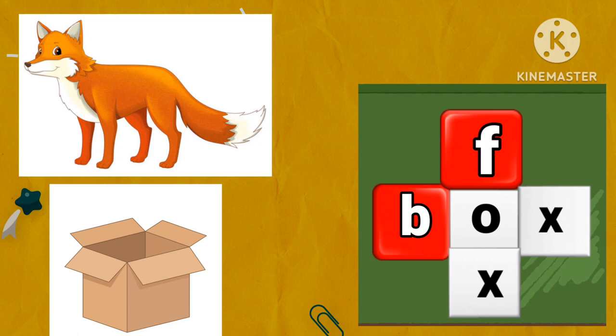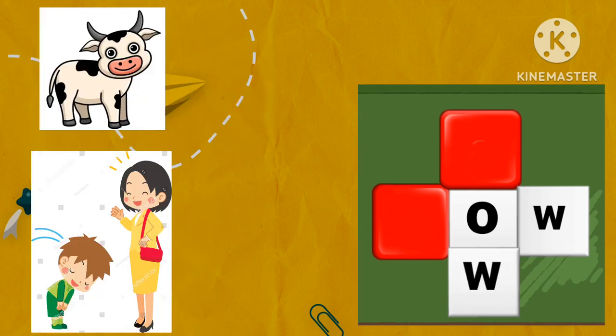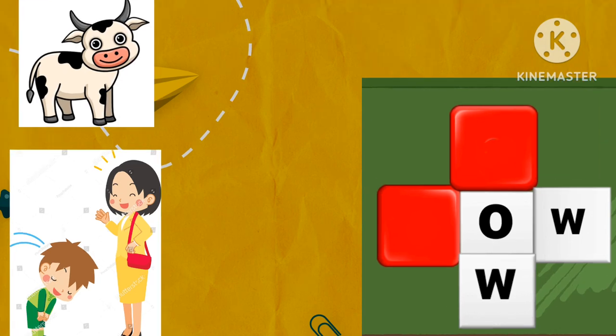Well done. Look at the pictures and tell the rhyming words. Cow, bow. Which letters are missing? C and B. Drop the missing letters in the red boxes. C for cow and B for bow.